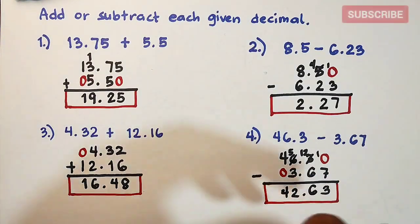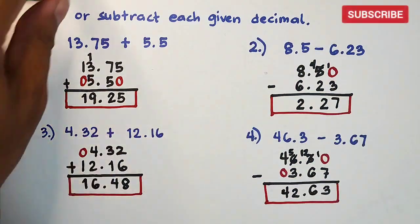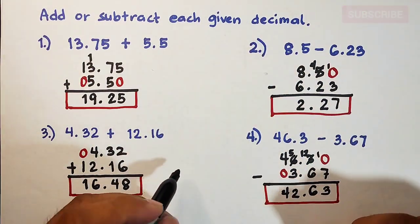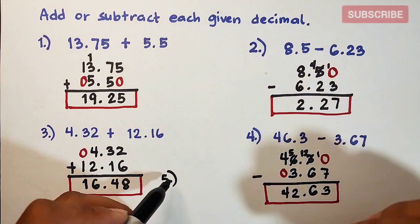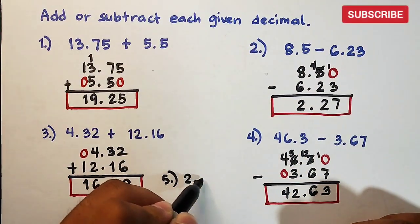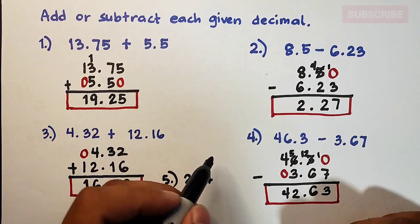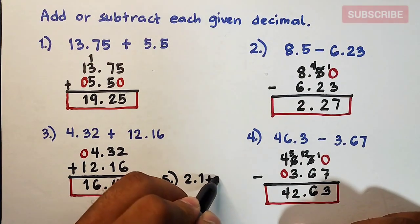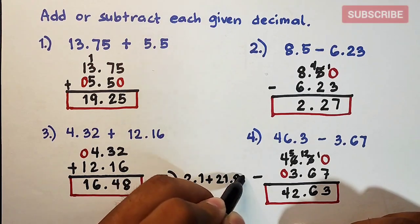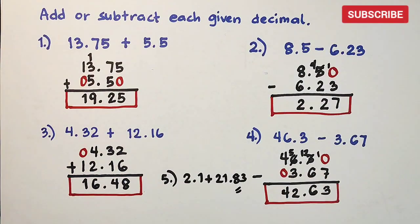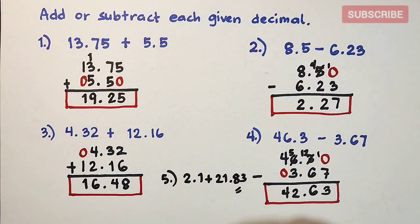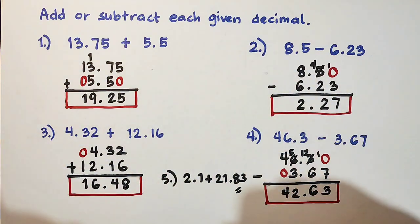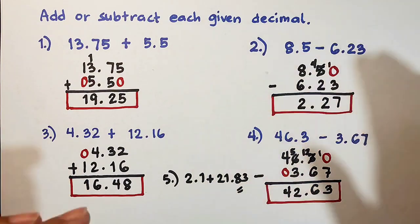I hope guys you learned something from this video. Let's try your assignment for number 5: we have 2.1 plus 2.1 plus 21.83. You can put your answer in the comment section. If you're new to my channel, don't forget to like and subscribe and hit the bell button to be updated on our latest uploads. Again, it's me, T-Shergon — thank you, bye bye!